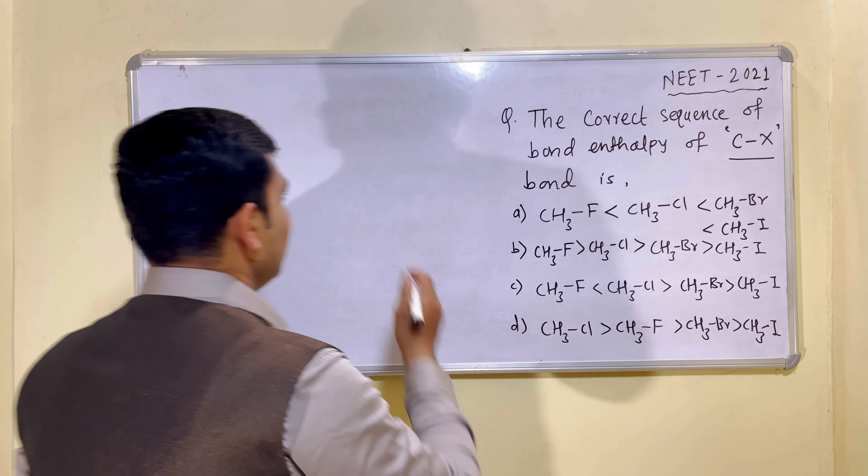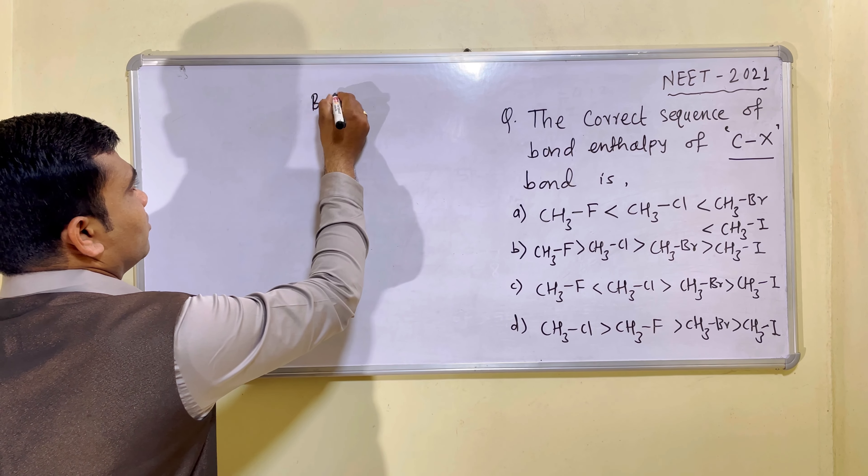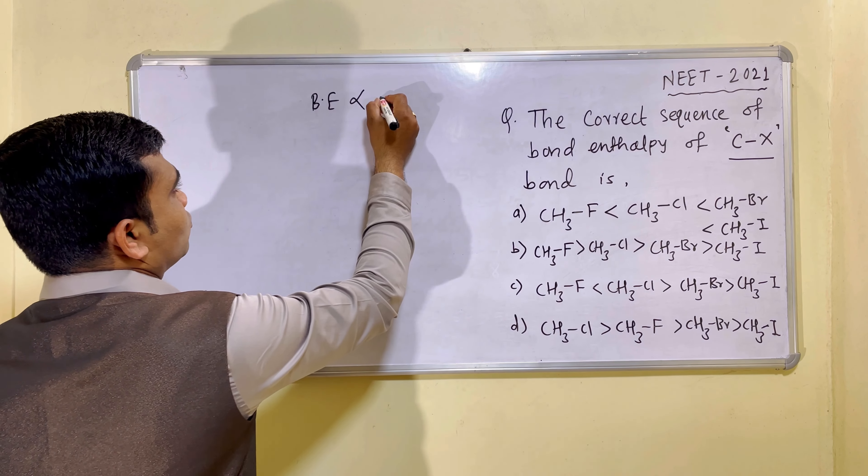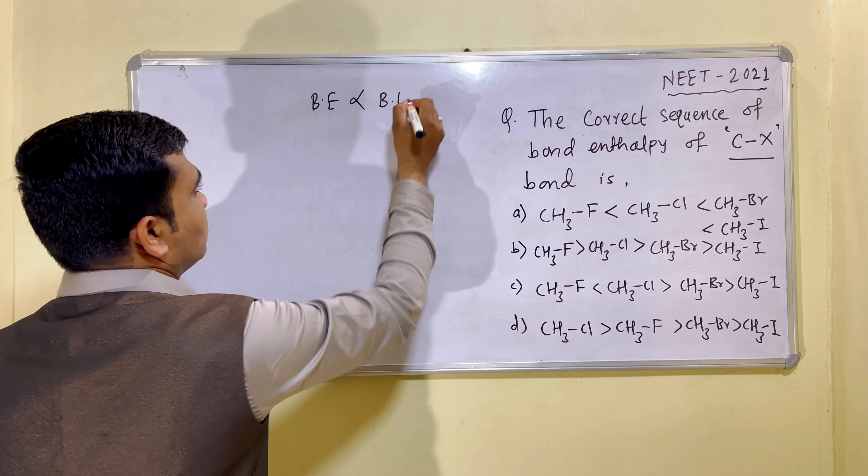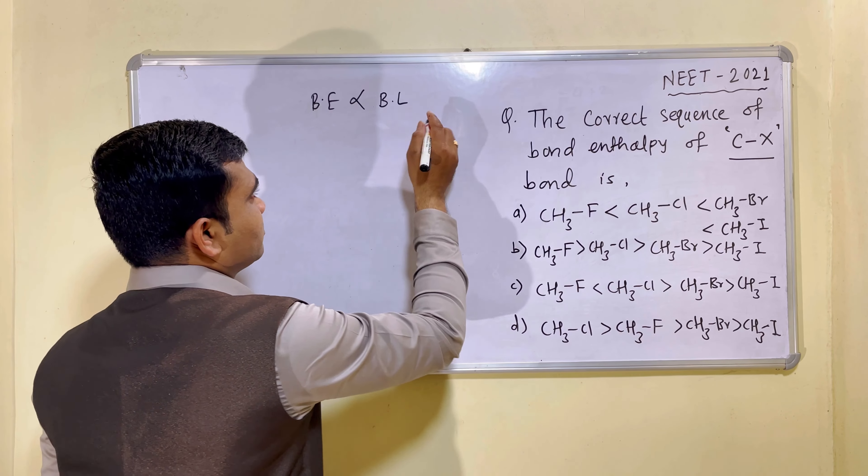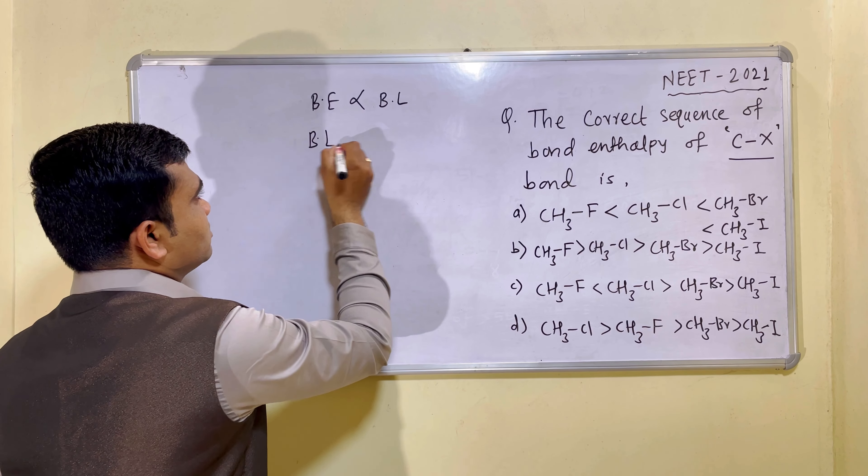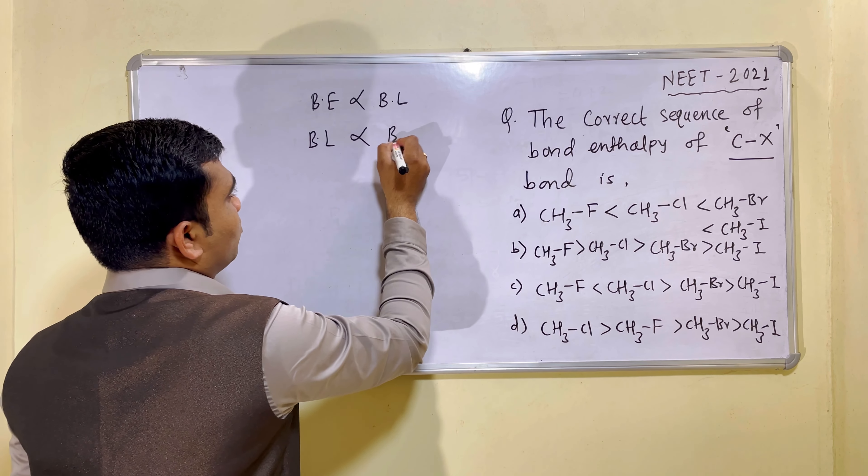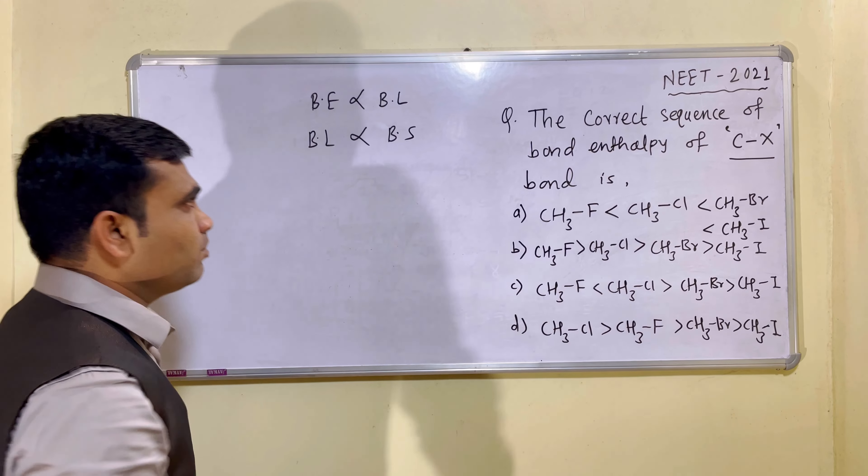So bond enthalpy, you can say, bond enthalpy is directly proportional to bond length. And bond length is inversely proportional to bond strength.